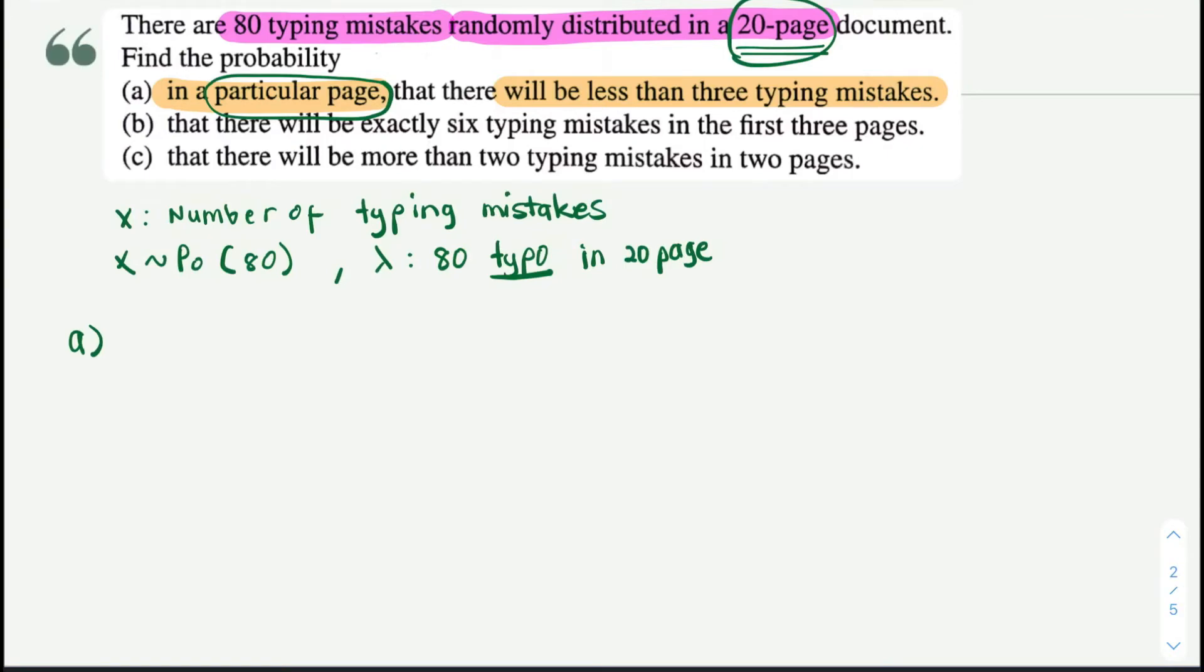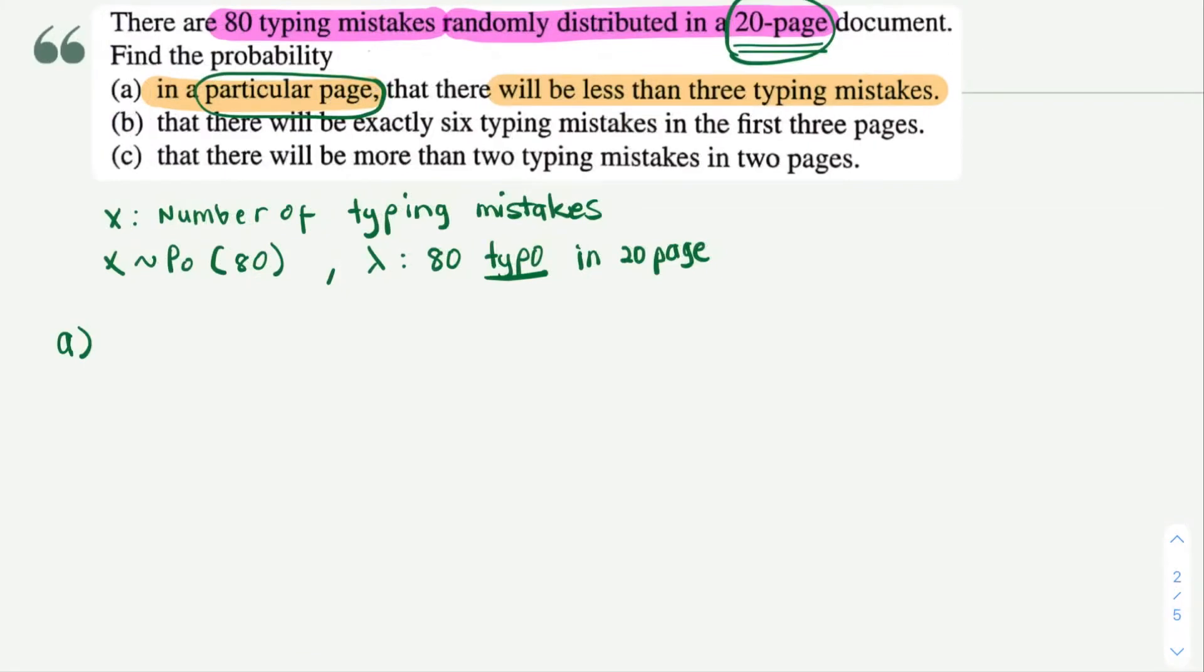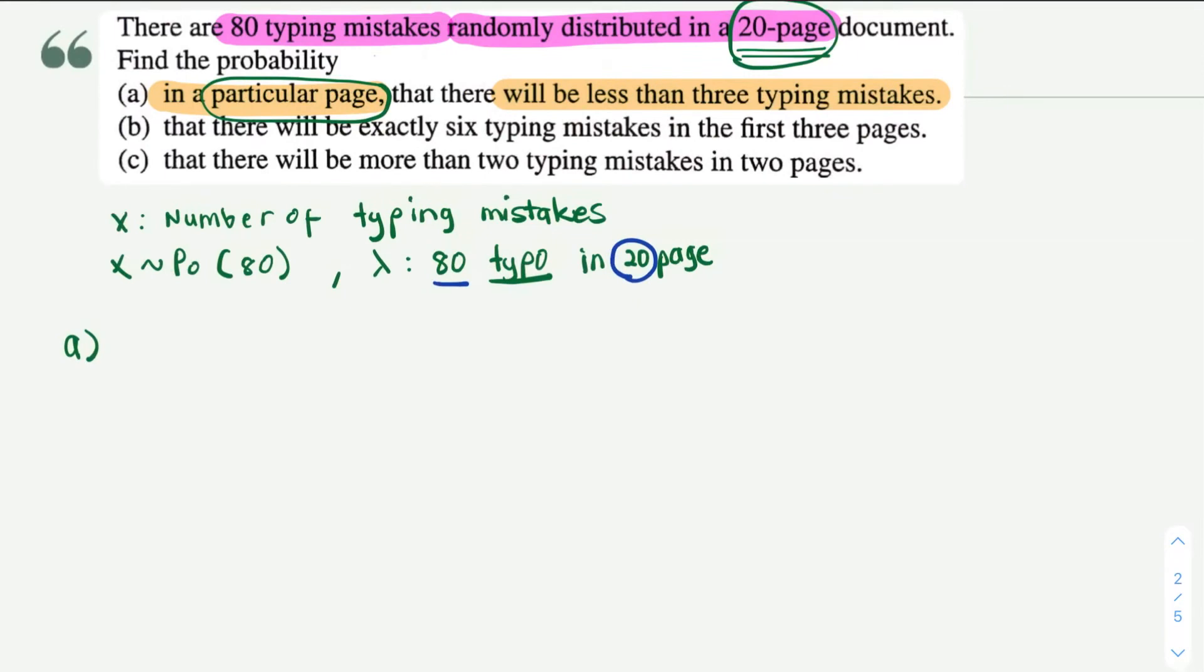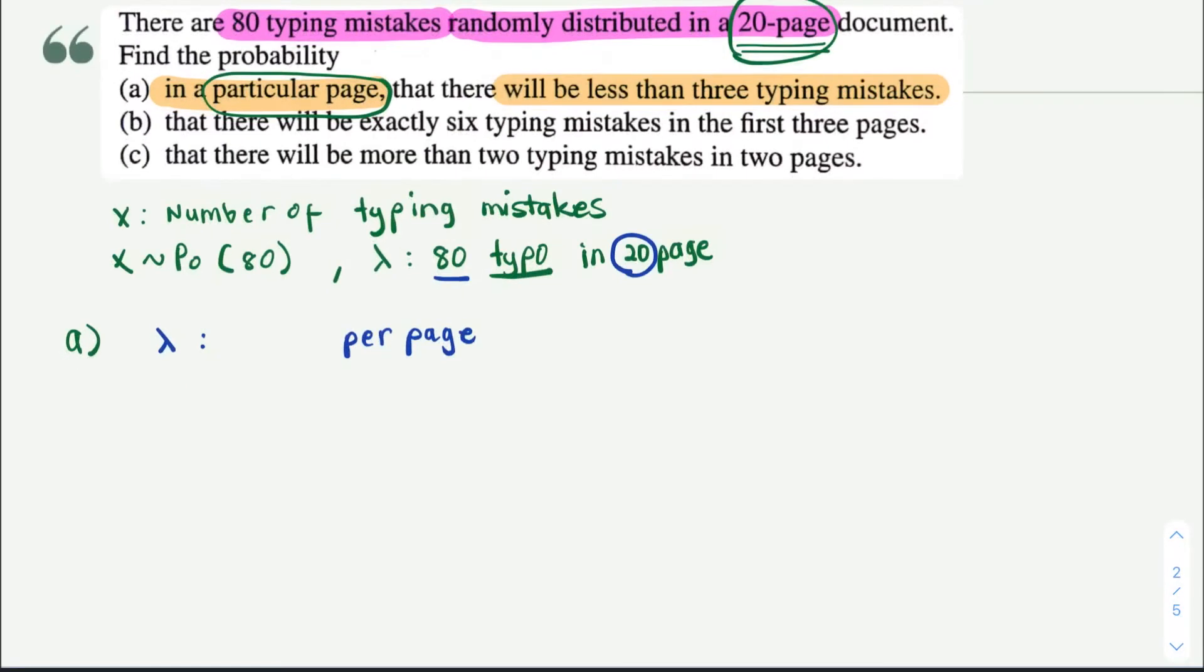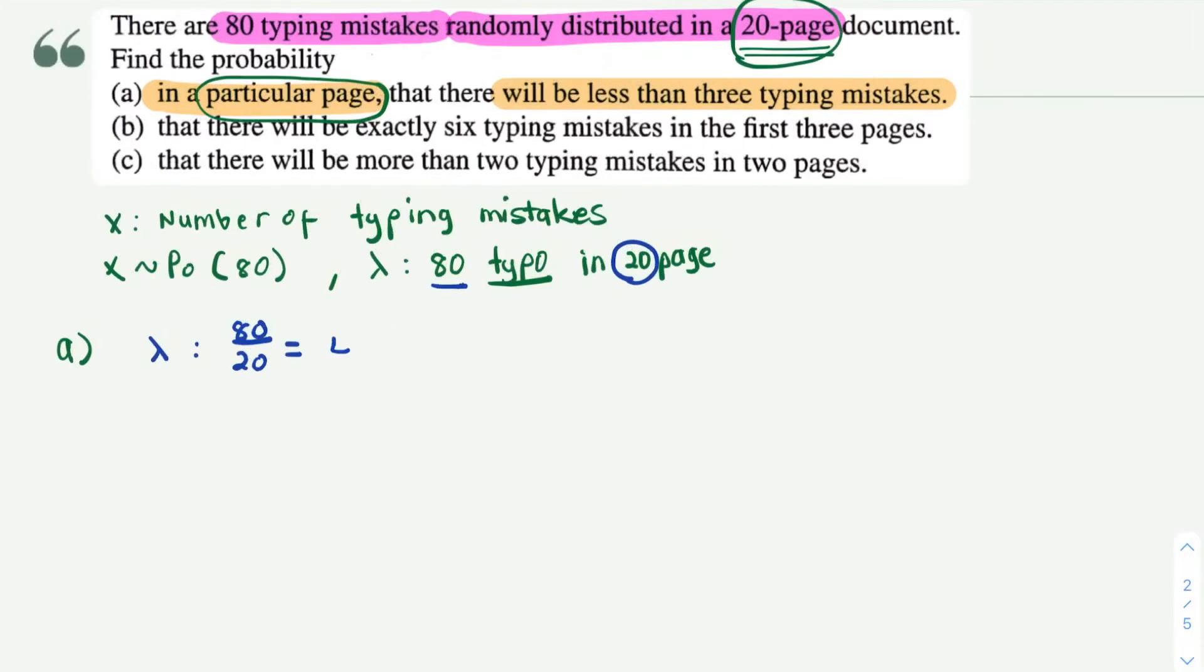Okay, so let's say you have over here lambda is 80 for 20 pages. Per unit means per page, so lambda you want to change into per page. Per page means for a page or one page. What you have: 80. What your space interval is: 20. So what you do is just simply 80 divided by 20, where you will get 4 typing errors per page.